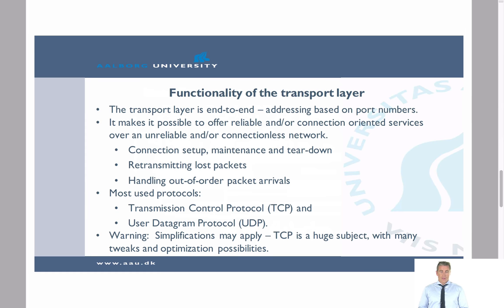Usually in the transport layer we go through different steps. If there is a connection, then we have a connection setup. We have to maintain the connection and tear it down. We have to handle retransmission of lost packets — so if we detect that a packet is lost in the network layer, the transport layer will offer the functionality to retransmit it. We also handle out-of-order packet arrivals, because in the network layer packets might arrive out of order. For example, packets sent as 1, 2, 3 might arrive as 2, 1, 3. The transport layer keeps track of which packets are sent and in what sequence, and makes sure they are reordered before being delivered to the application.